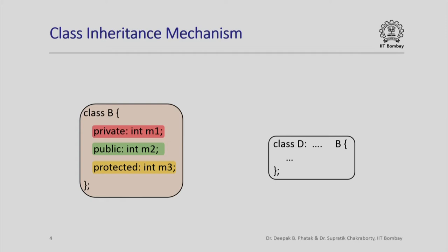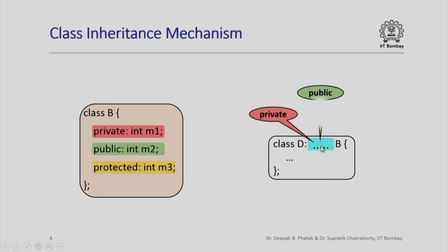Let us dive into the class inheritance mechanism. Consider a class named B with three data members m1, m2, m3 — all of type integer — where m1 is declared private, m2 is declared public, and m3 is declared protected. Now I want to write a class D derived from class B, and this derivation itself can be in one of three modes: private, public, or protected derivation.